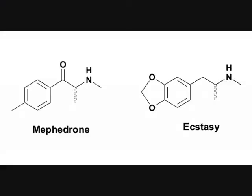If we look at the structure of ecstasy, you'll see this is also quite similar to the structure of Mephedrone. The carbonyl group that's present in Mephedrone is missing, and instead of a methyl group attached to the aromatic ring, we have an acetal-type functional group present in ecstasy. But fundamentally, that amine-type structure — which is often related with the activity of these drugs — is retained in this molecule. So again, I would expect Mephedrone to be somewhat similar to ecstasy.